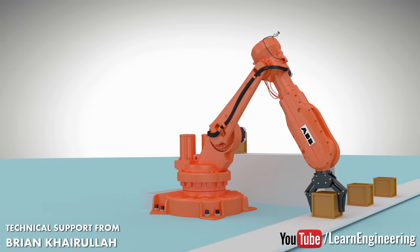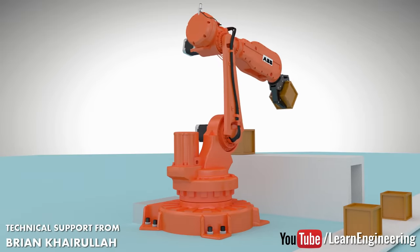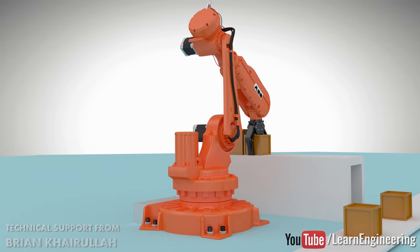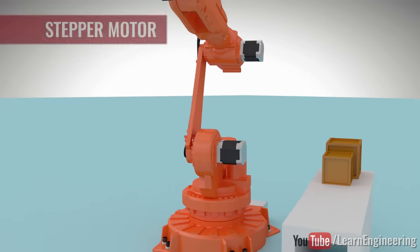How does a robotic arm in a manufacturing facility repeat the exact same movements over and over? How does an automated milling machine move with such precision? It's all because of the stepper motor.